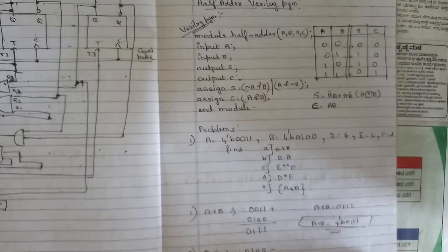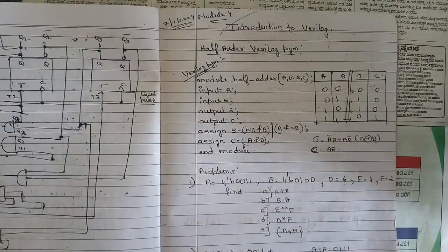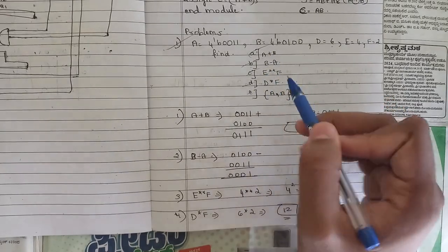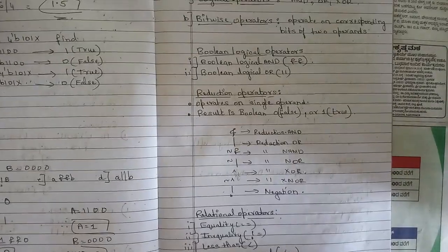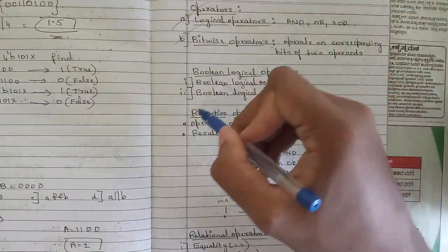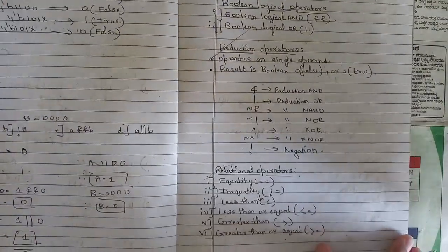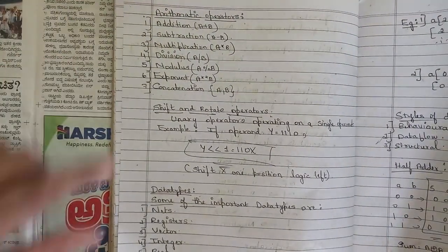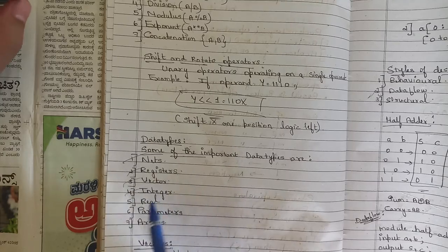From Module 4 — Introduction to Verilog — one question covers bit sequence, addition, subtraction, multiplication, division. They will also ask about types of operators: logical operators, bitwise operators, reduction operators, relational operators, arithmetic operators, shift and rotate operators. Also note important data types: nets, registers, vectors, integers, reals, and parameters.